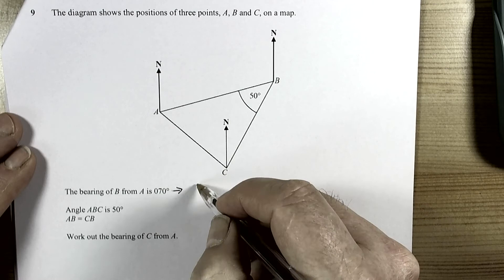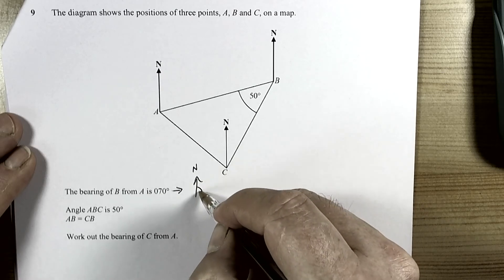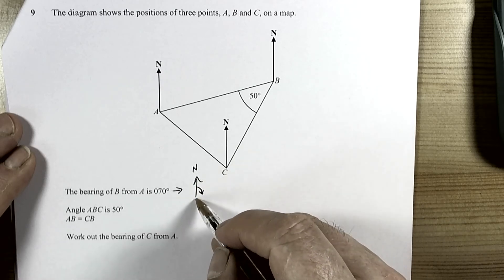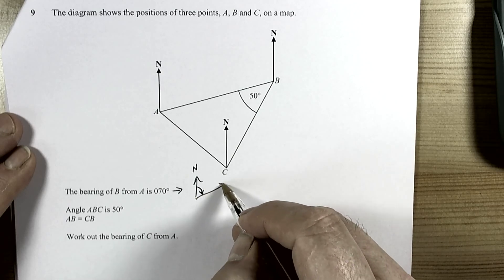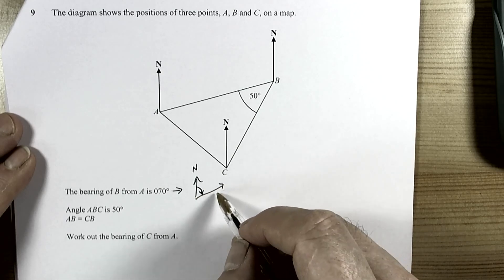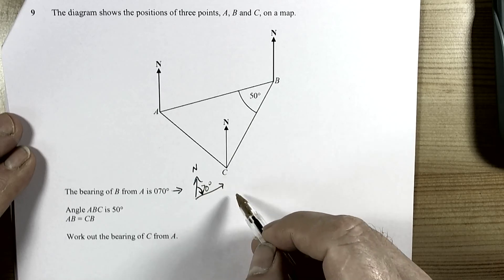So remember what bearings is about. It's about measuring the amount of turn you make in a clockwise direction from north until you're facing the direction you want. So in this case they're saying that must have been 70 degrees.